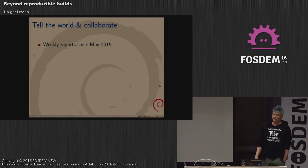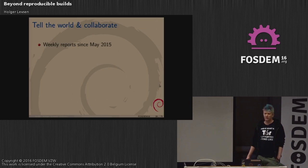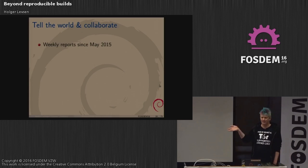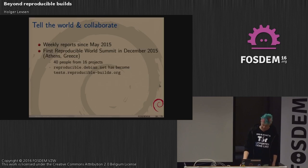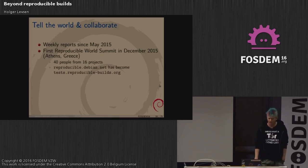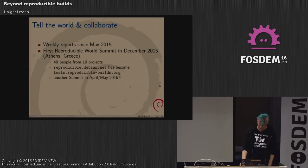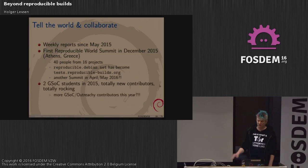Since May last year, every single week Luna has written a report about our efforts listing patches written, packages fixed, and testing framework development. It's on Planet Debian but you can also subscribe to the RSS feed. We had a summit in Greece in December with 40 people from 16 projects — that's where we also renamed this test setup. We'd like to have another summit in April or May; if you're interested in collaborating, please talk to me. Really, if you want to attend the summit, come.